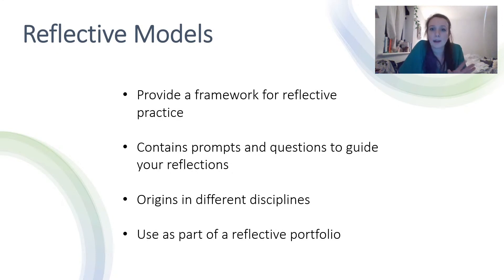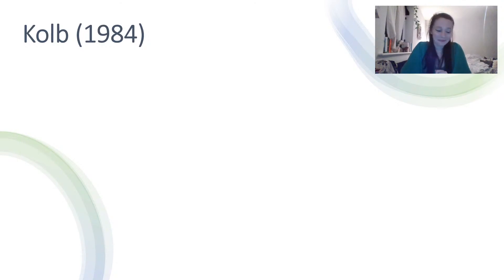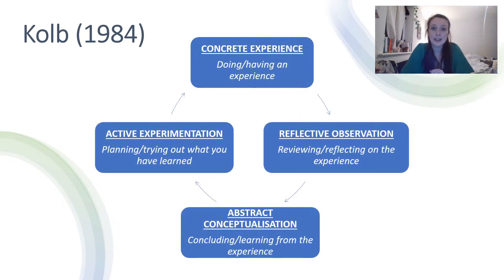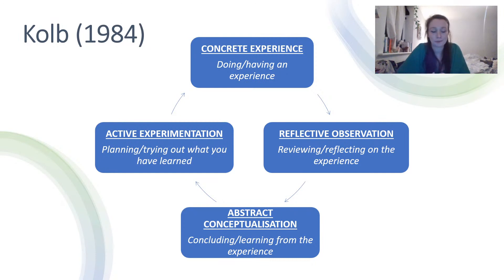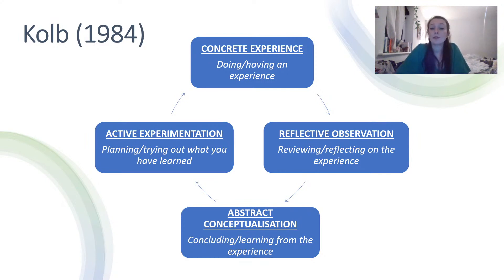Now let's start thinking about the Kolb model. It's a cycle — you might often hear it referred to as the Kolb reflective cycle. We start at the top with concrete experience: doing or having the experience, what actually happened. Then we come to reflective observation: reviewing or reflecting on the experience, thinking about what went right, what went wrong, which bit seemed important — essentially reflecting on it afterwards.